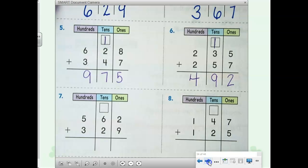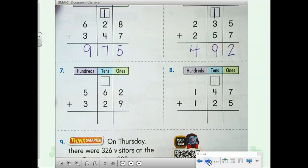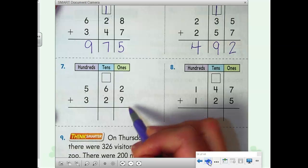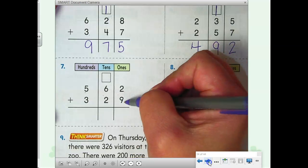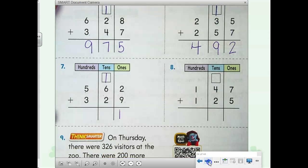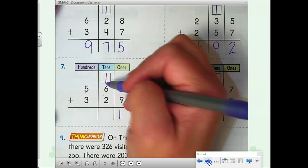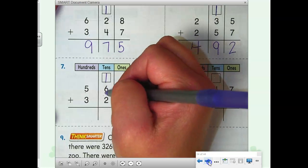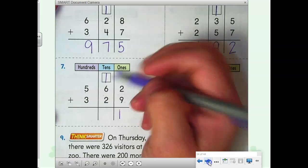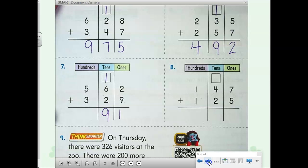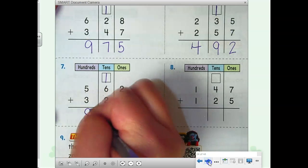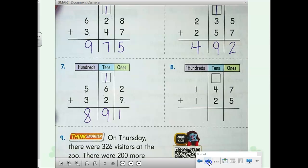Let's go up to number 7. 562 plus 329. Add your ones first. 2 plus 9, 11. 11 is 1 ten and 1 one. Now add our tens. 1 plus 6 is 7, 7 plus 2 more, 9, super close again. And then in our hundreds, 5 plus 3 is 8. 891.